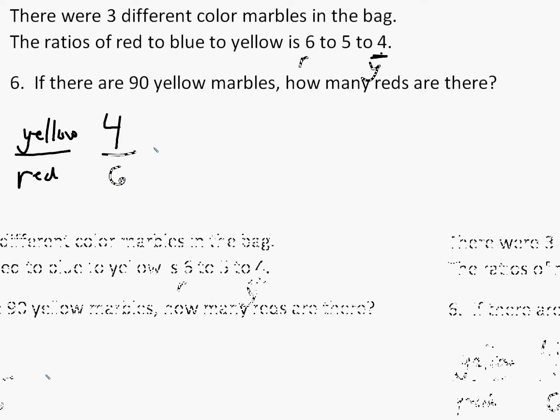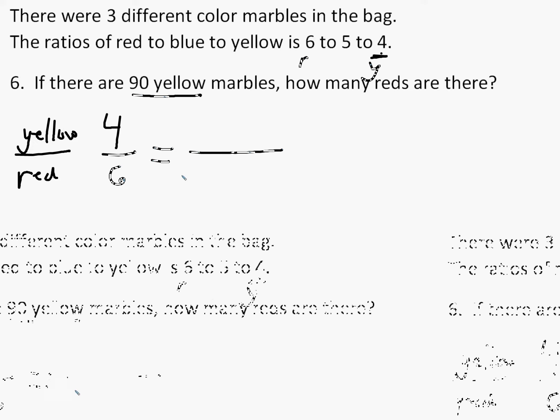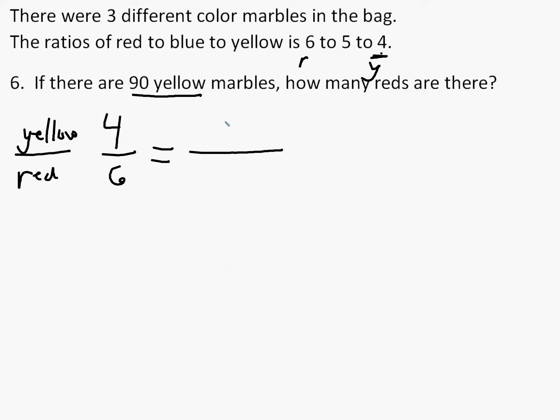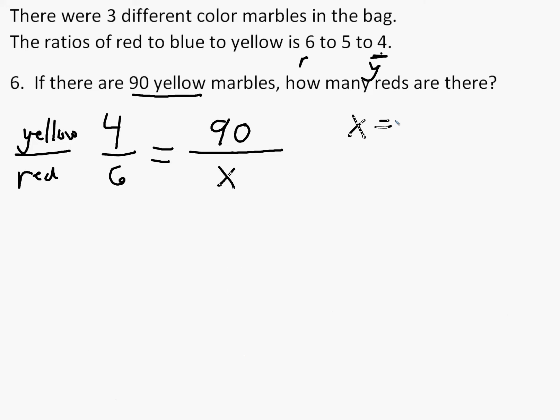And we can now make a proportion equals. Now we know there's 90 yellows. So we have yellow in the numerator here. So I'm going to put yellow in the numerator up here over what we're trying to find, we can say x. So x equals the number of reds.